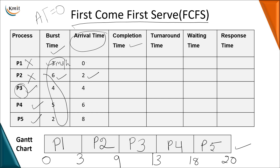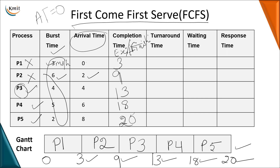Once the Gantt chart is done, we calculate completion time. P1 completed at three milliseconds, P2 at nine, P3 at thirteen, P4 at eighteen, and P5 at twenty. Turnaround time is completion time minus arrival time: P1 gives 3 minus 0 = 3; P2 gives 9 minus 2 = 7; P3 gives 13 minus 4 = 9; P4 gives 18 minus 6 = 12; P5 gives 20 minus 8 = 12.